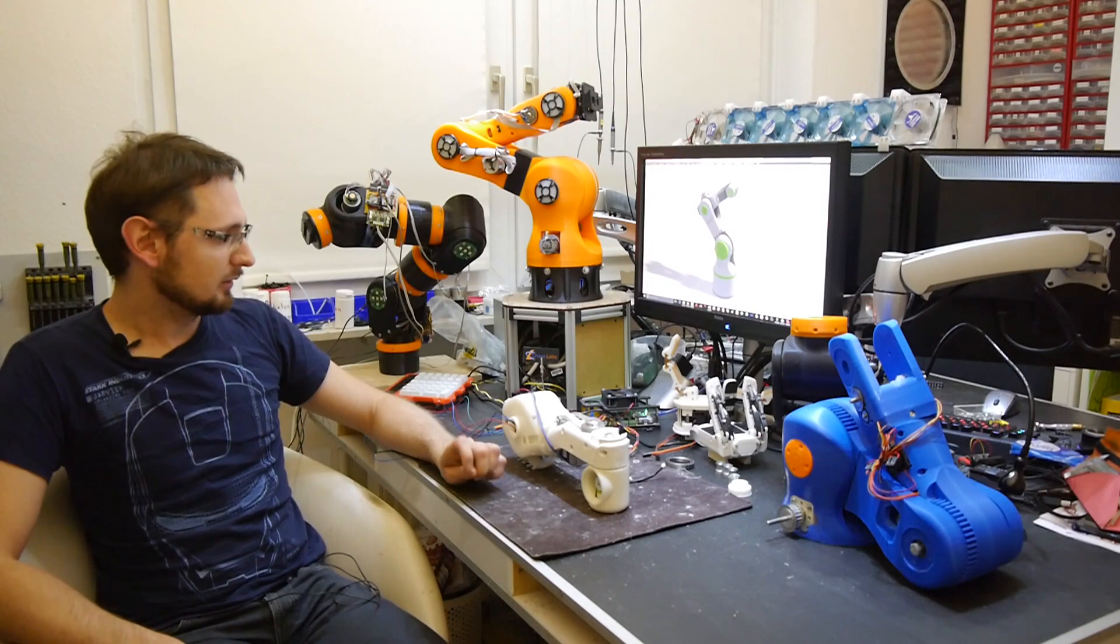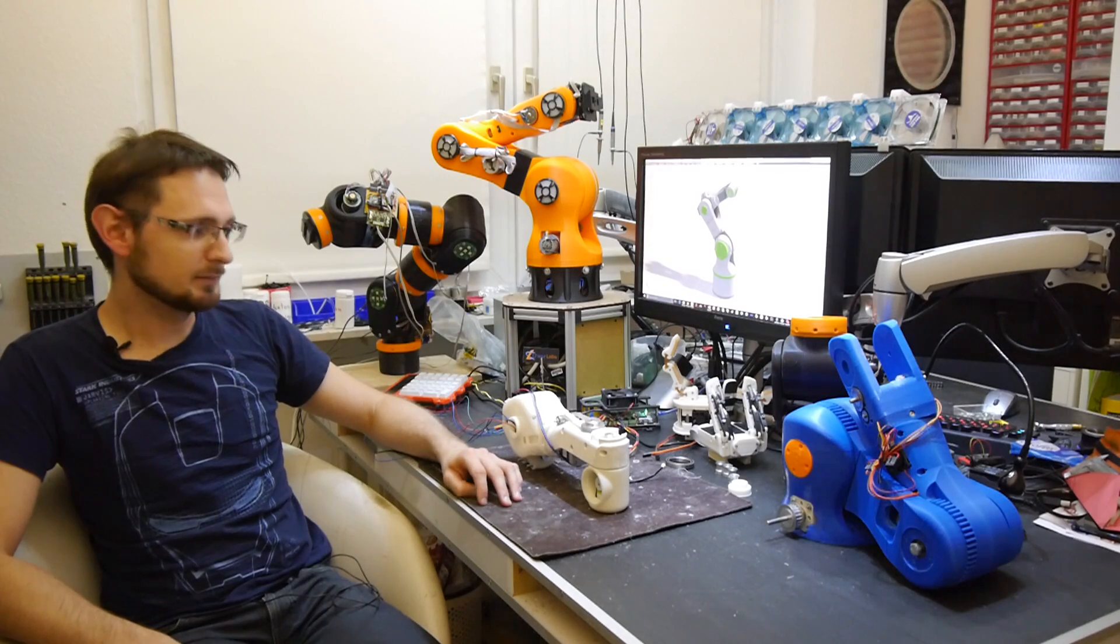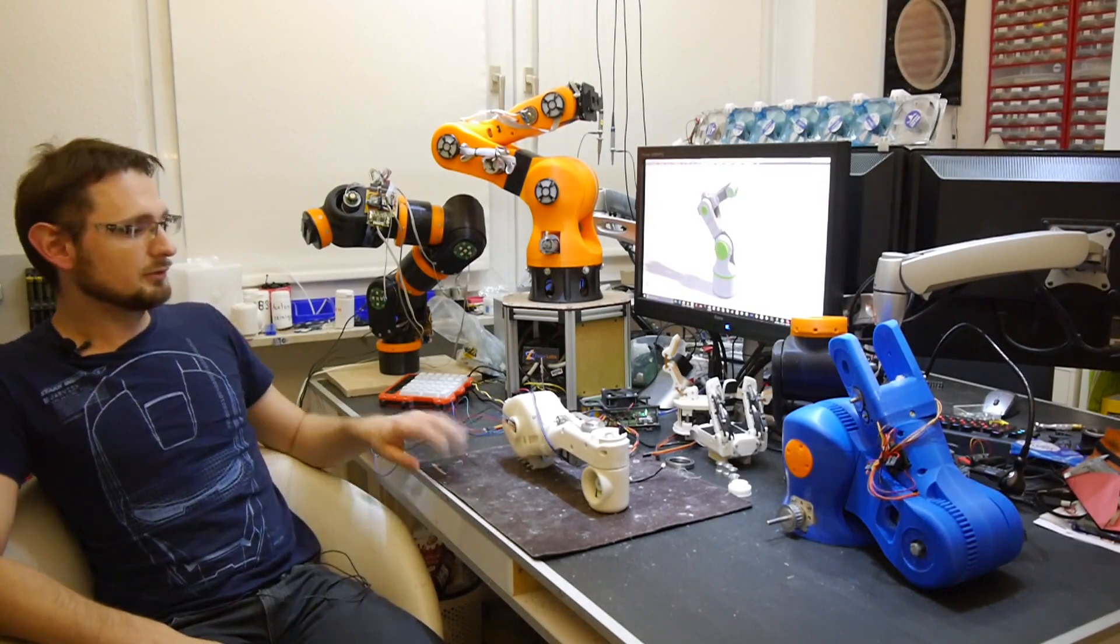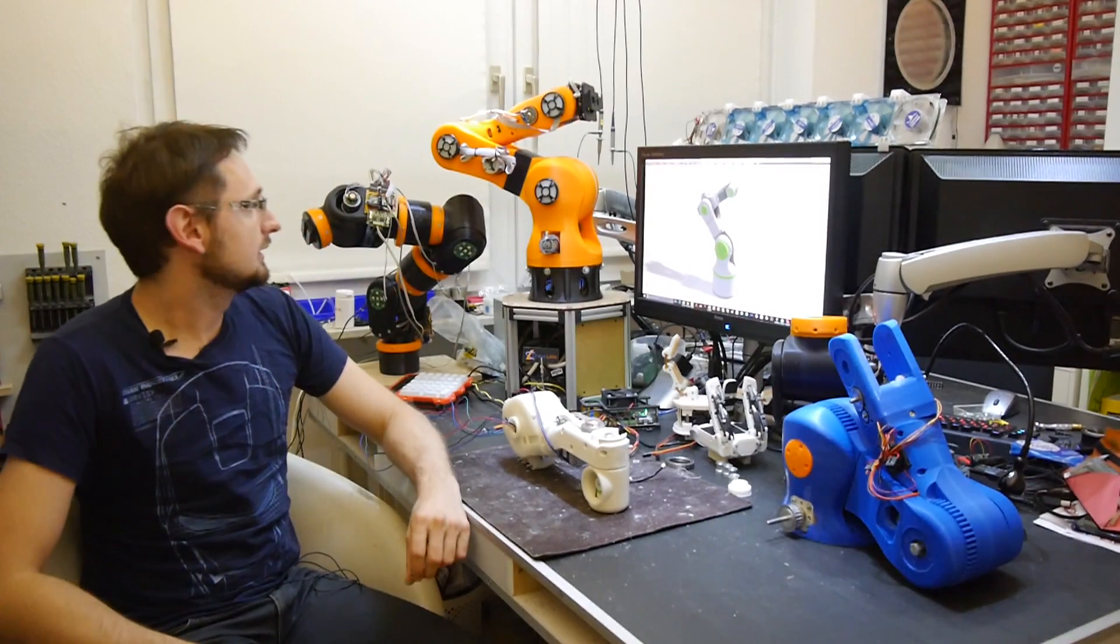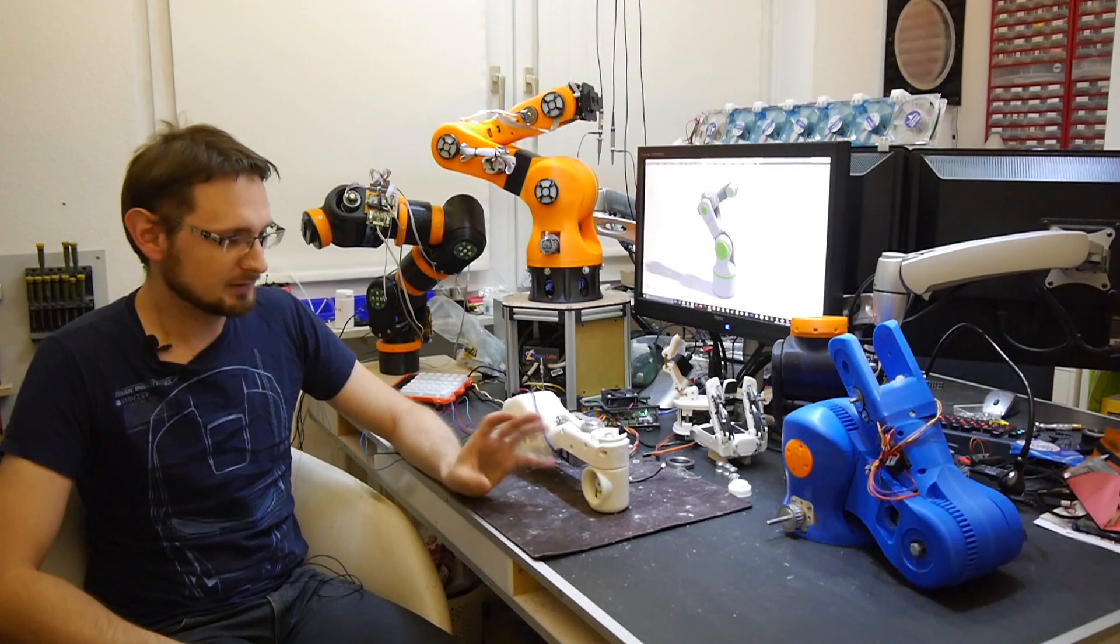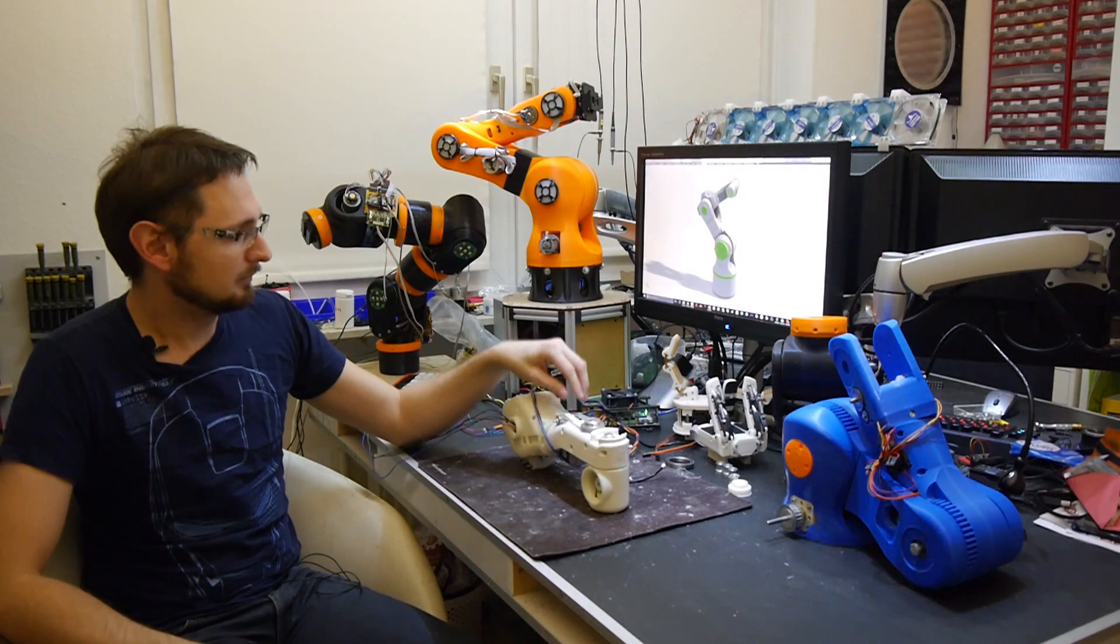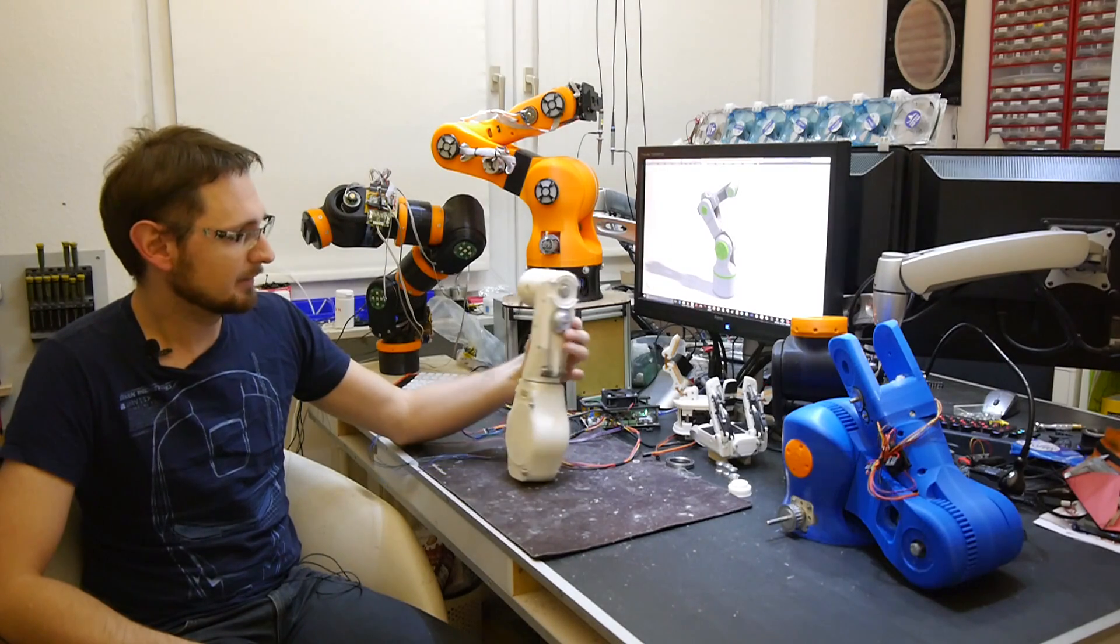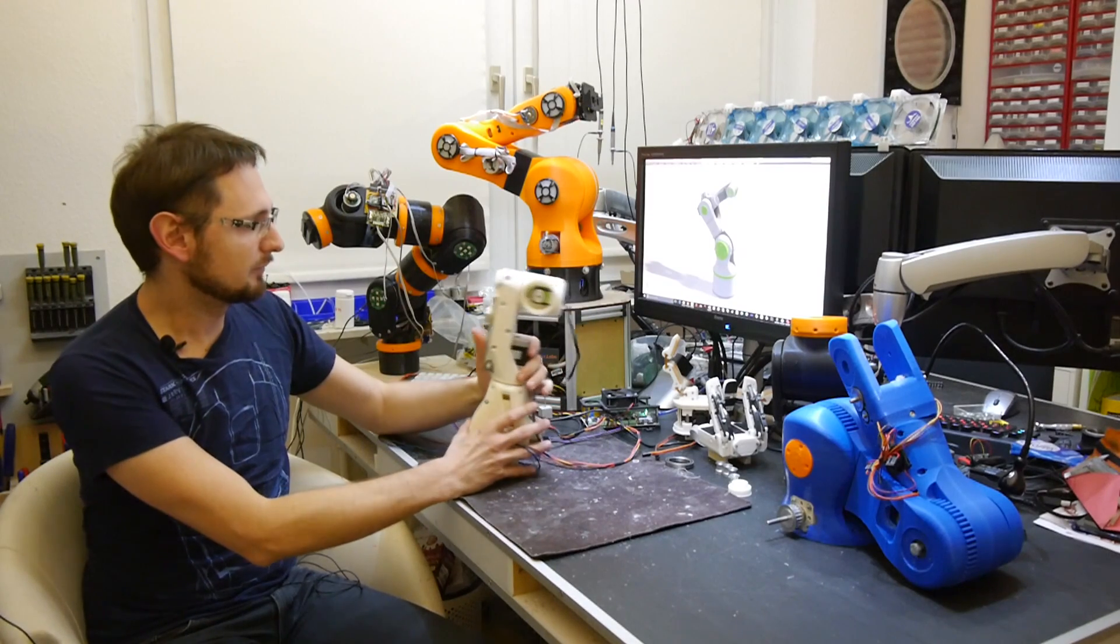Unfortunately, they still did not provide enough torque to use them directly, and I no longer wanted to use gearboxes because they are expensive and hard to find, and also you have a lot of problems with the backlash. So I came up with a two-stage timing belt solution, and this is the version 4 of my robot arm.